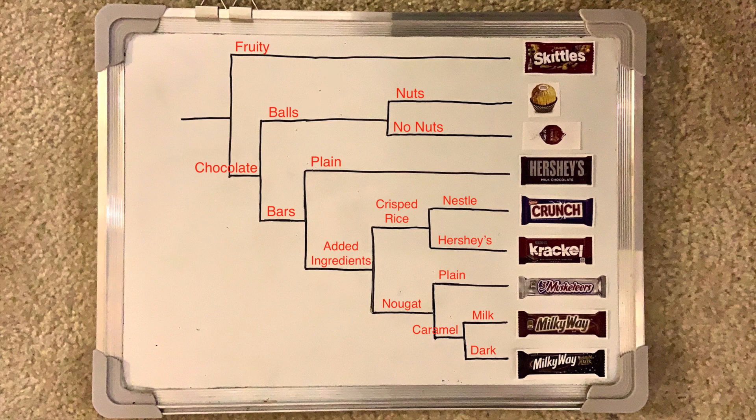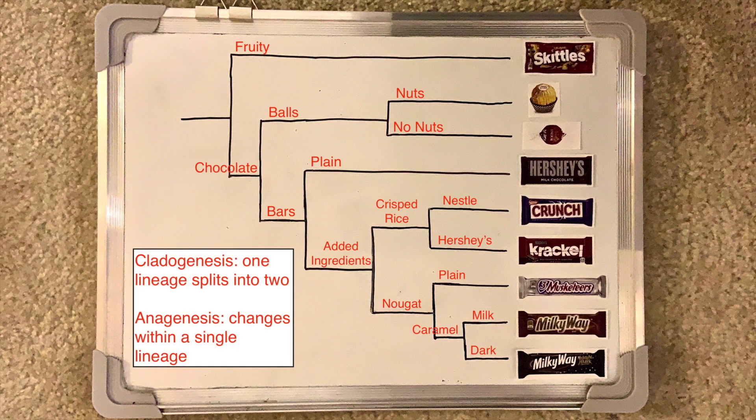When one species, or type of candy in this case, splits into two different types, that is called cladogenesis. One lineage becomes two, and the branches evolve separately from each other. However, evolutionary change can also occur within a single lineage over time, which is called anagenesis.